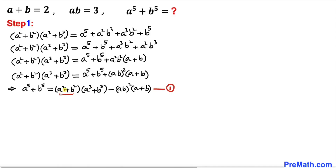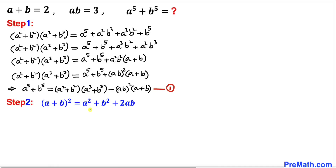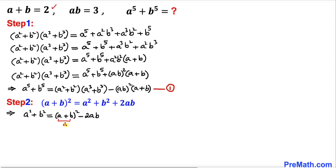Our task is now to find the value of a squared plus b squared and a cubed plus b cubed. Let's recall the identity: (a plus b) squared equals a squared plus b squared plus 2ab. Isolating a squared plus b squared gives us: a squared plus b squared equals (a plus b) squared minus 2ab. Our a plus b value is 2, so we replace it by 2, and ab is 3.